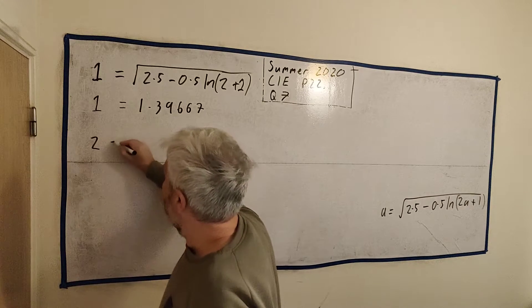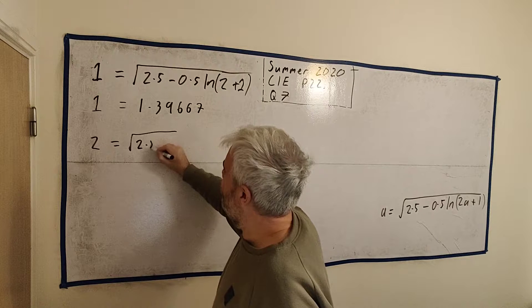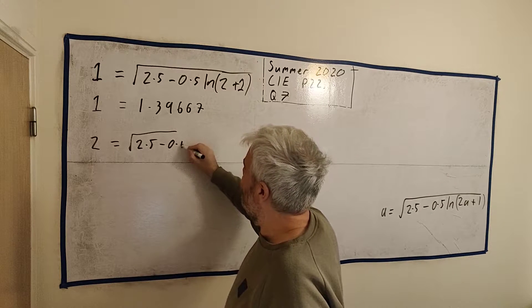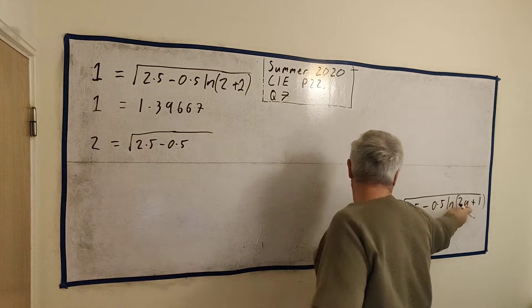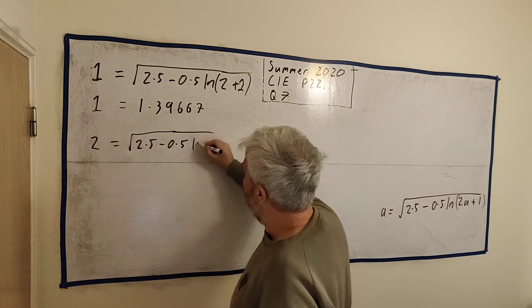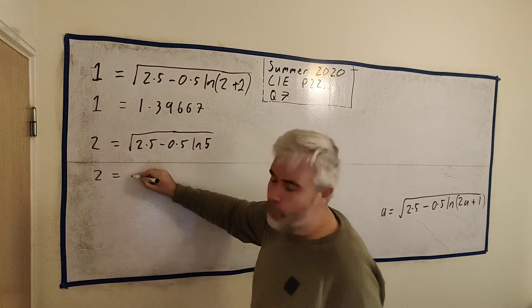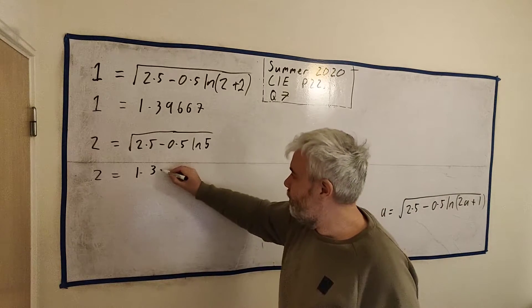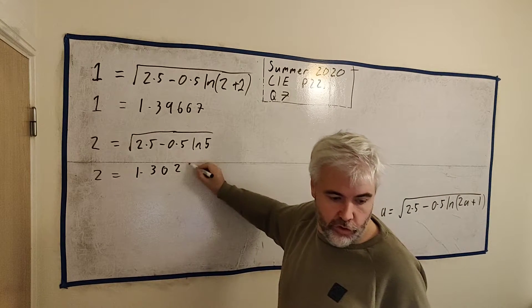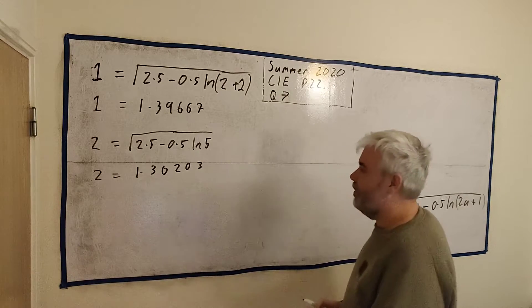Let's see what happens when we put 2 in. 2 equals, and we do the same thing here. We get the square root of 2.5 minus 0.5 natural log of 2 times 2 plus 1, so natural log of 5. And again, we get out 2 is equal to 1.330203.